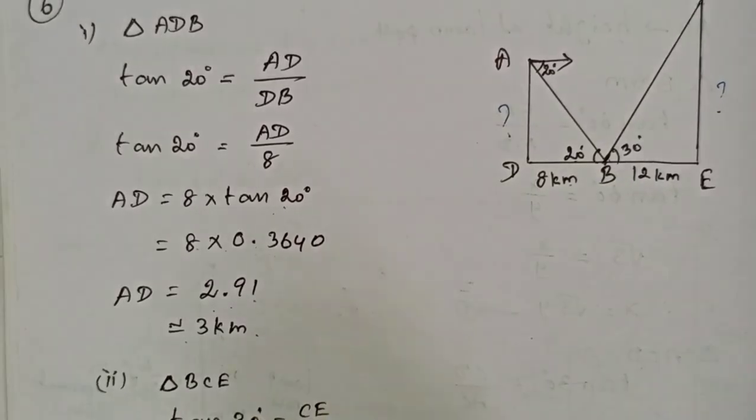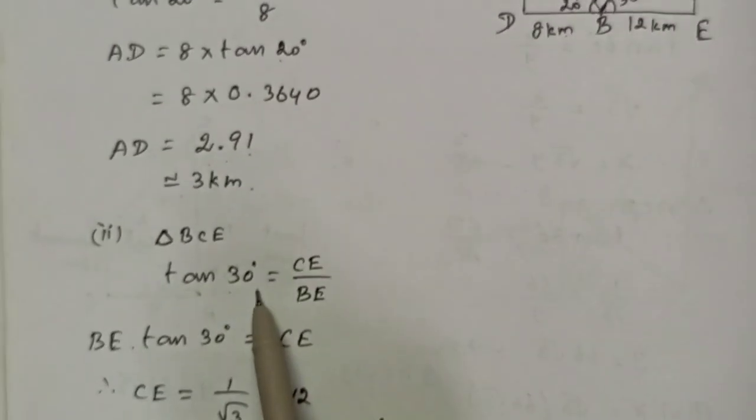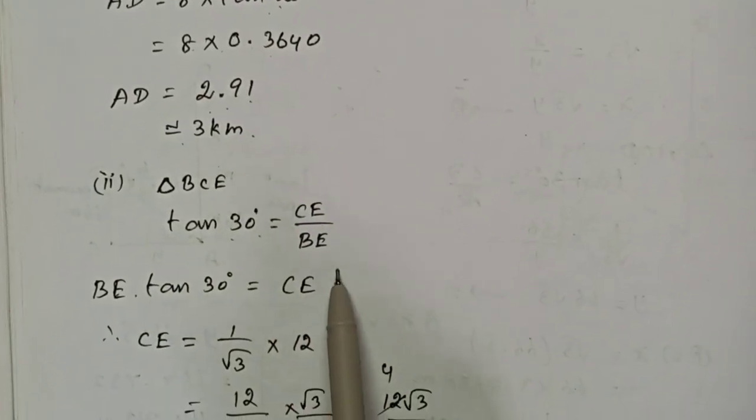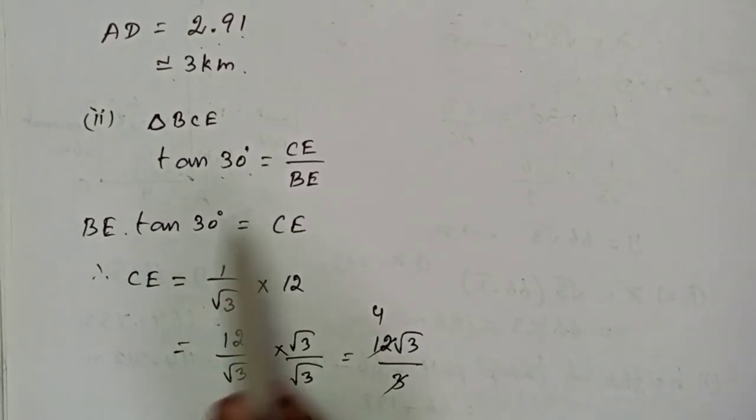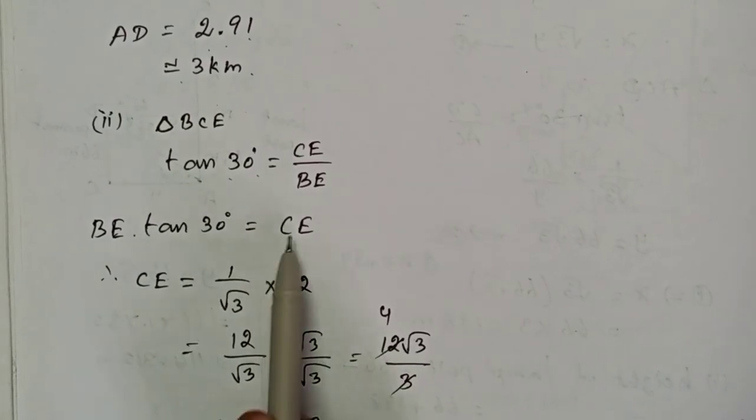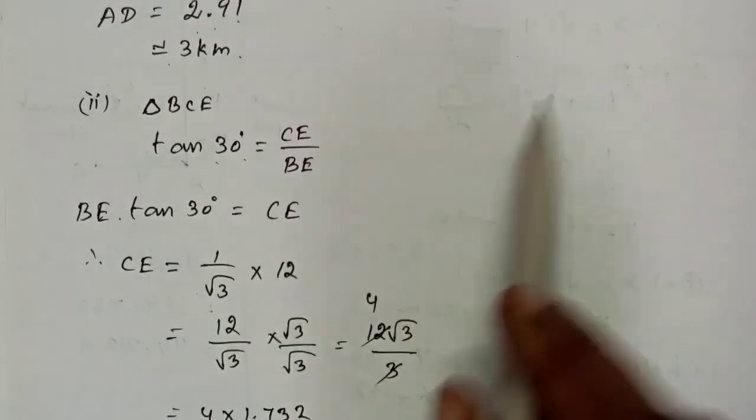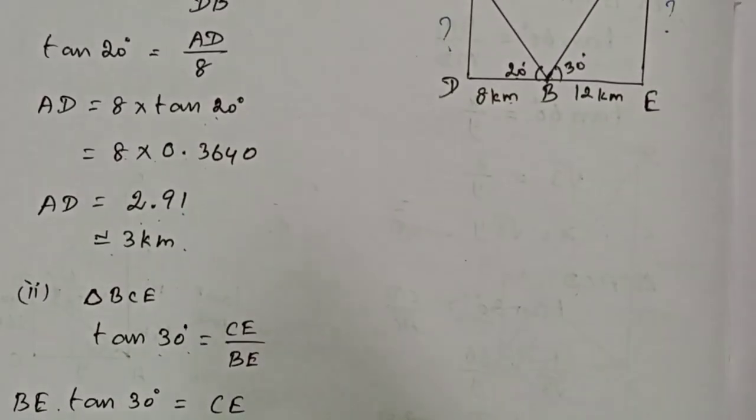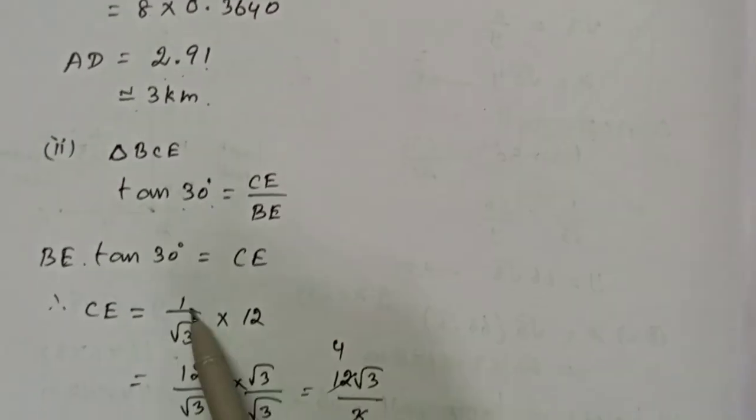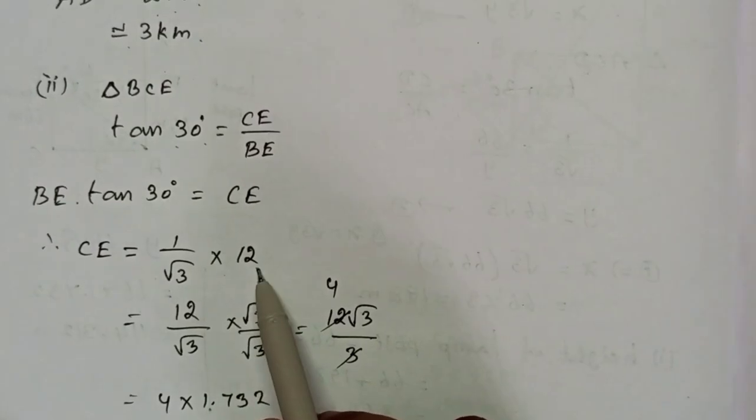For the second height at 30 degrees, tan 30 equals CE by BE. BE into tan 30 equals CE. We have BE equals 12 km from the question. So tan 30 equals 1 by root 3 into 12.